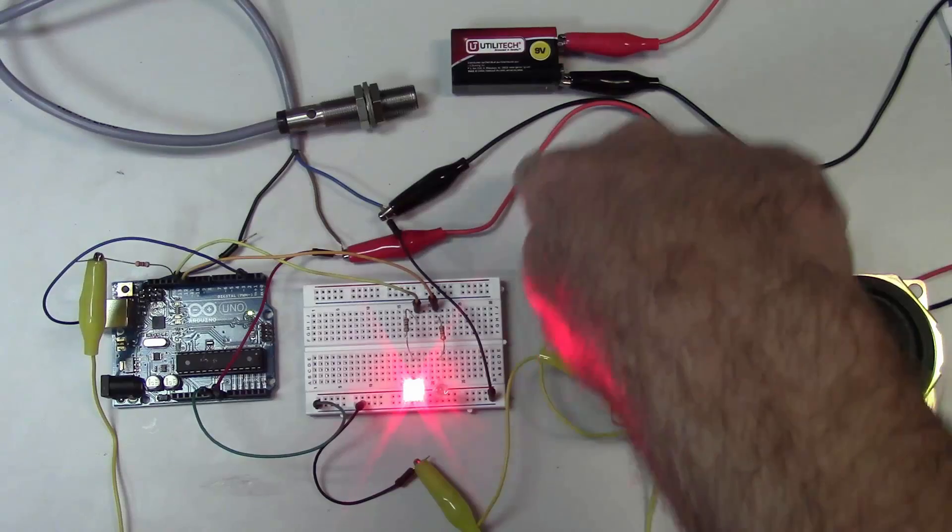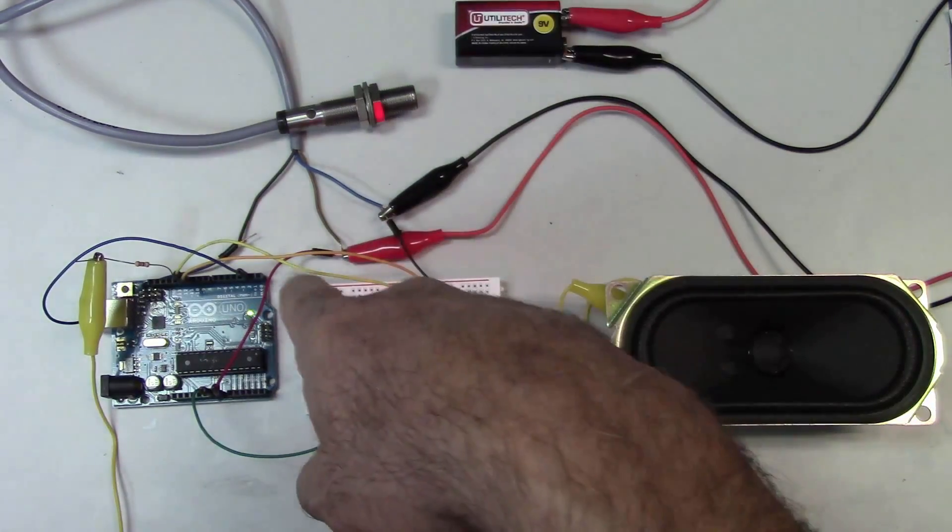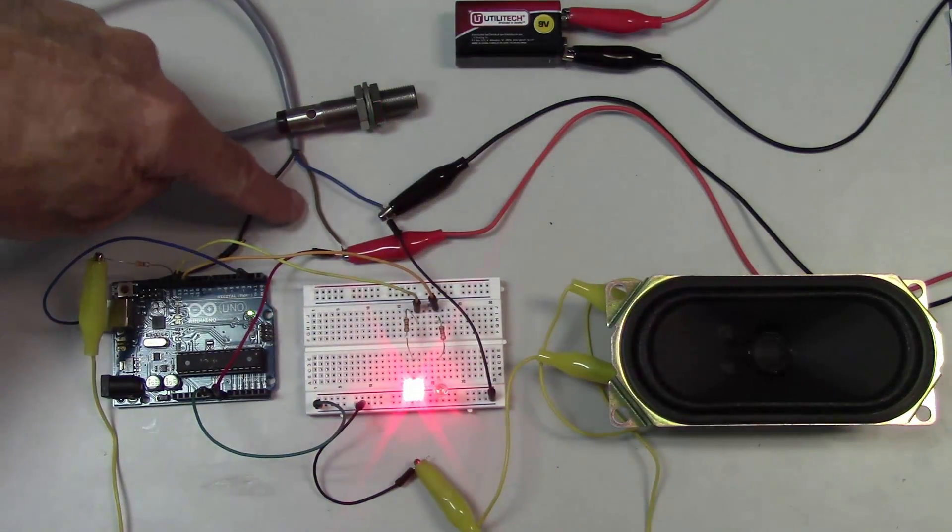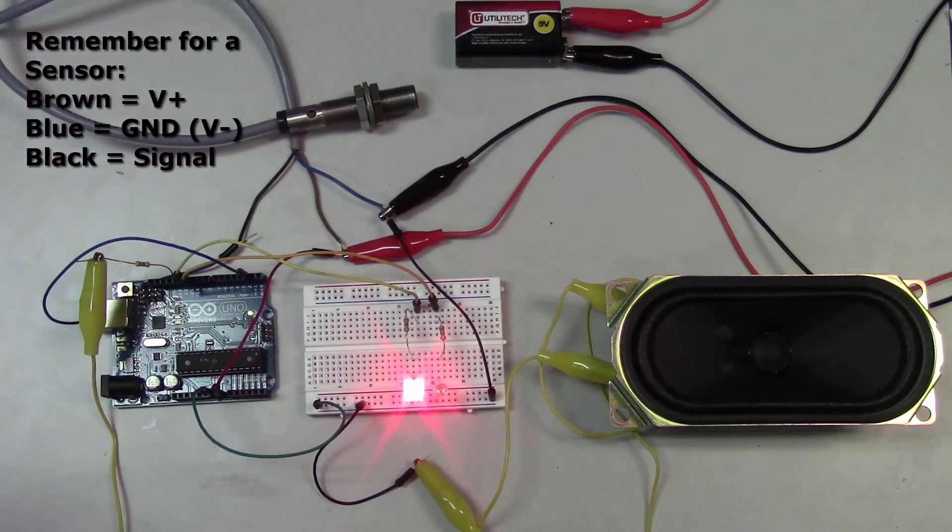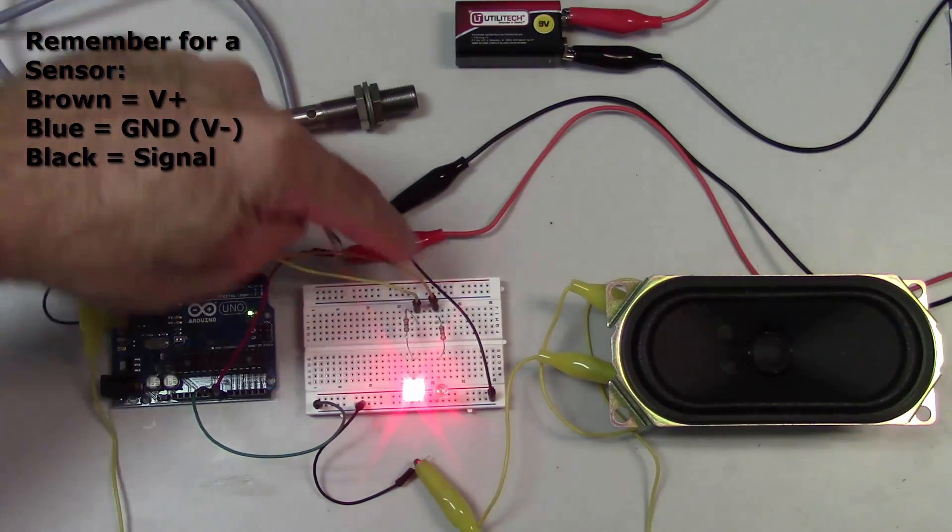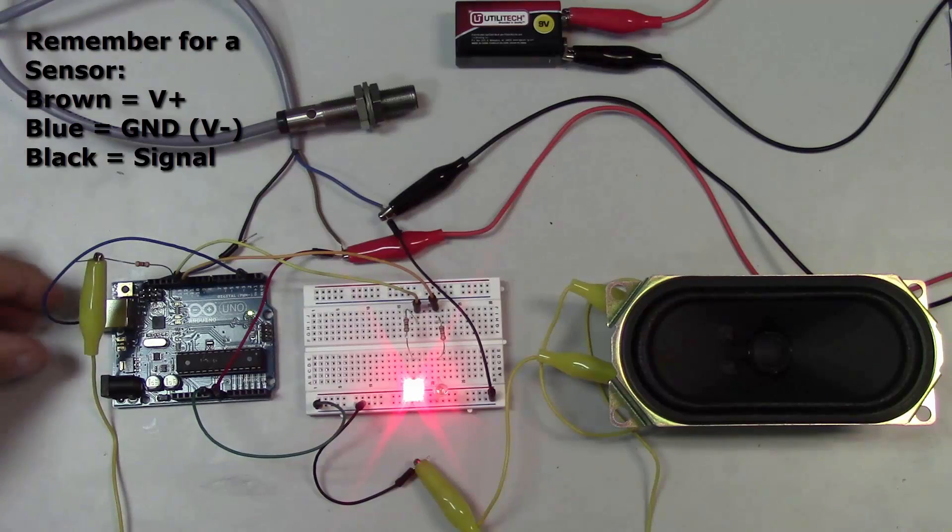All right so I've got my V plus from the 9 volt battery going to VIN on the Arduino and I also have it going to the brown wire on the sensor. So that supplies power to both the sensor and the Arduino. My ground is ground for the sensor and the Arduino also and the only thing left is my output from the sensor.